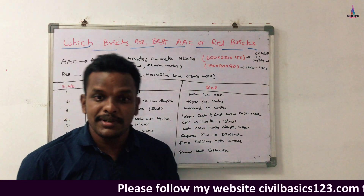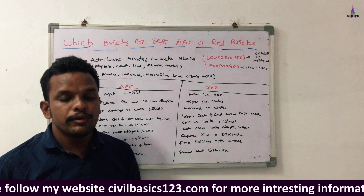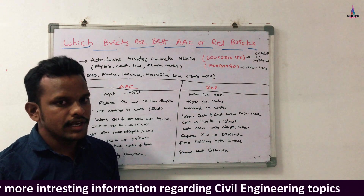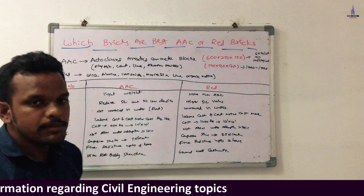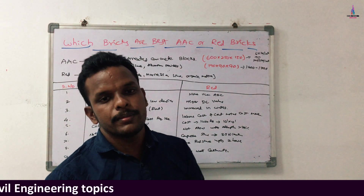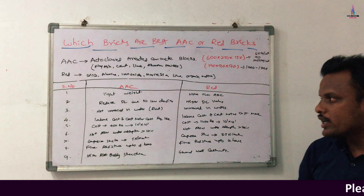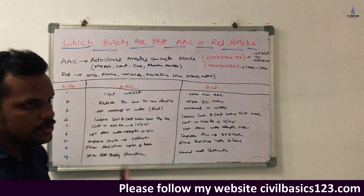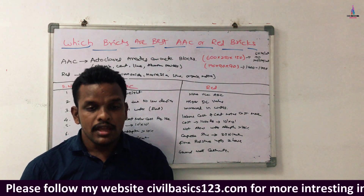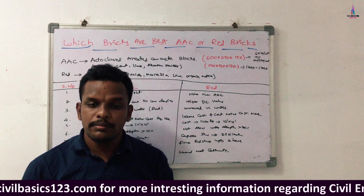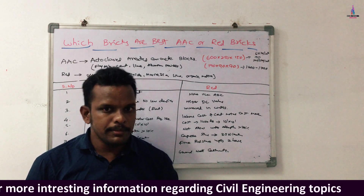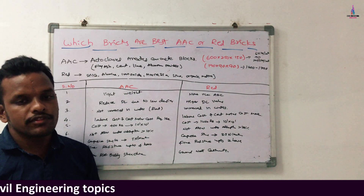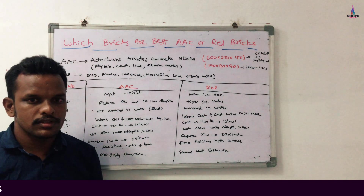The ninth point is the usage of these blocks. AAC blocks are used in commercial structures, apartment structures, or high-rise buildings due to the reduction in dead load and project cost. Red brick blocks are used in general construction like ground floor, G+1, G+2, and G+3 structures. AAC blocks are also more preferable where the shear strength of the soil is less, making them suitable for lightweight concrete development.